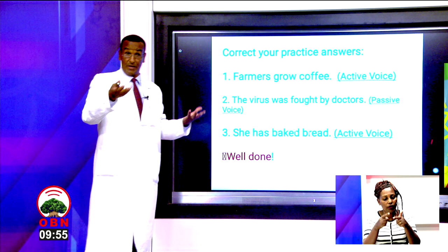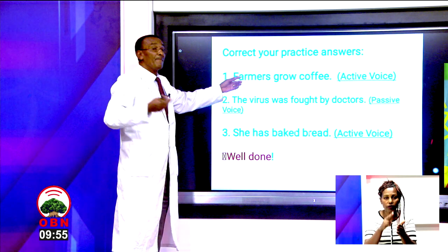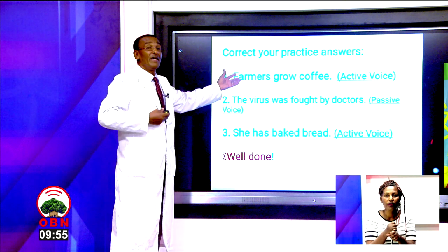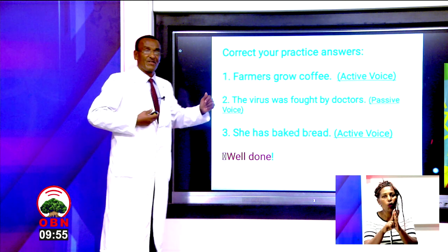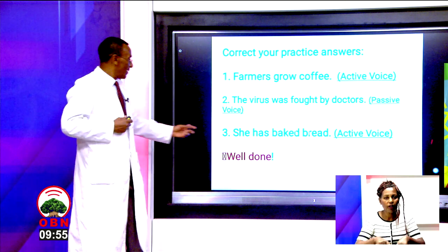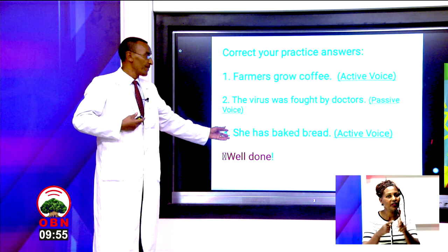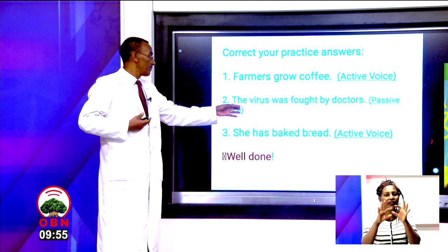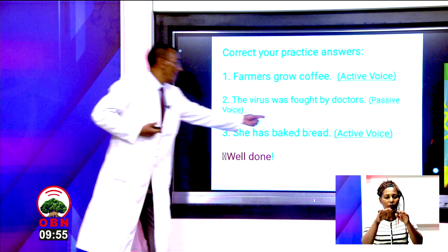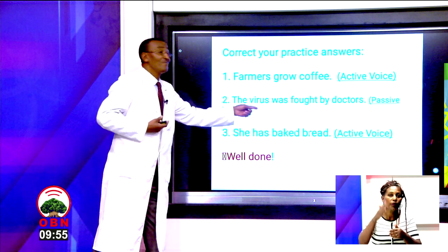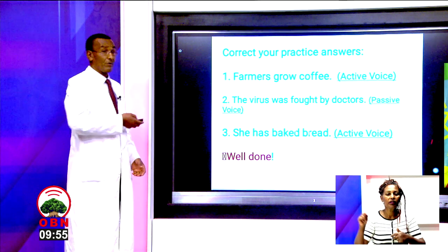It is easy to see the passive form for number one and number three. The passive form of 'farmers grow coffee' is: coffee is grown by farmers. The passive form of 'she has baked bread' is: bread has been baked by her.